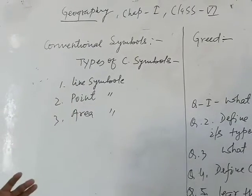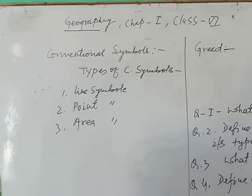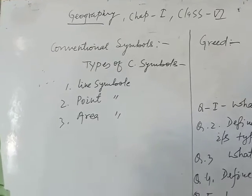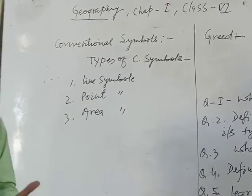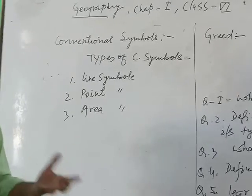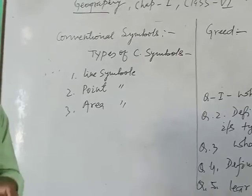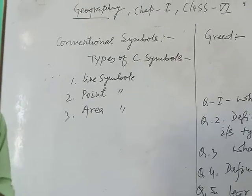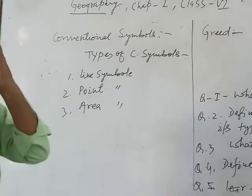Secondly, the point symbol. Suppose that on the earth there are wells, there are tanks, there are mosques, there are temples. All these points are shown with the help of point symbols on the map. When we read topo sheet, that is the special kind of map in which each and every information of the earth is given.